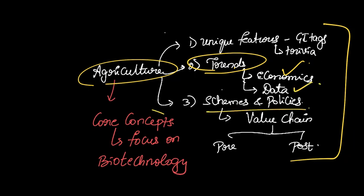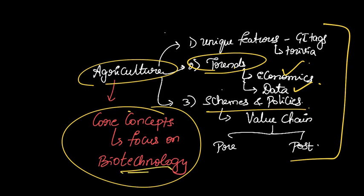Secondly, we will be talking about the Agricultural Census data and a few schemes and policies. And of course, the core concepts which include the discussion about GMOs, genetically modified crops, transgenic crops - what is the difference between them, Bt cotton, etc. I'll not be comprehensively covering everything like the unique features, GI tags, etc., which are trivial information.